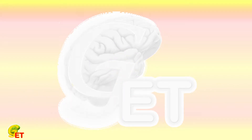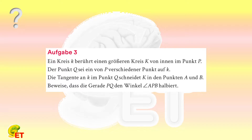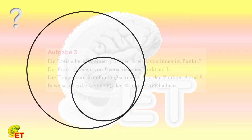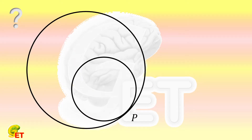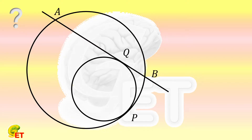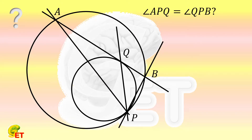Hello my friends, welcome back to our channel. Today we discuss the third task of the first round of the 2022 Federal Mathematics Competition in Germany. A small circle is tangent to a big circle from its inside at point P. The point Q is a different point from P on the small circle. The line tangent to the small circle at point Q intersects the big circle at points A and B. Please prove that the line PQ bisects the angle APB. Why not give it a try, and we will come back soon.